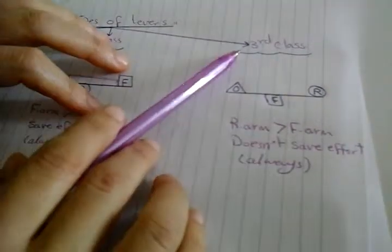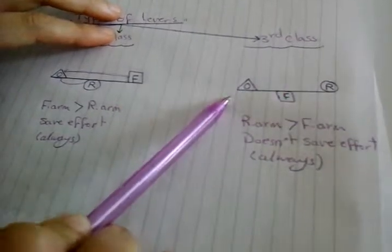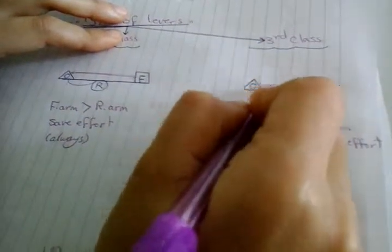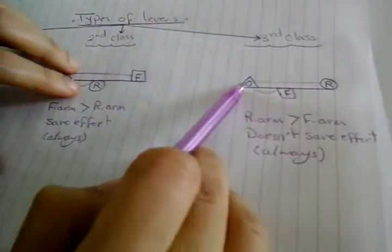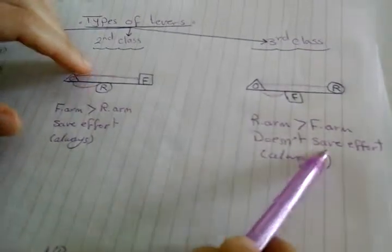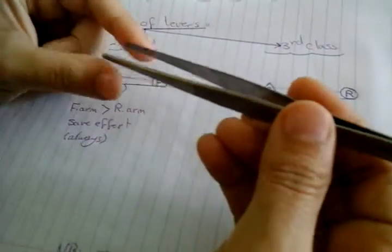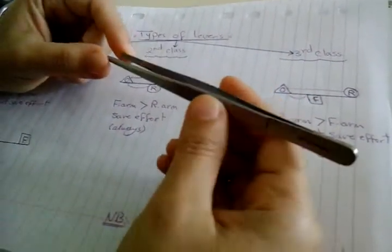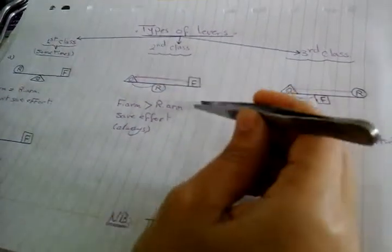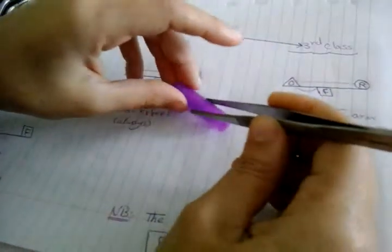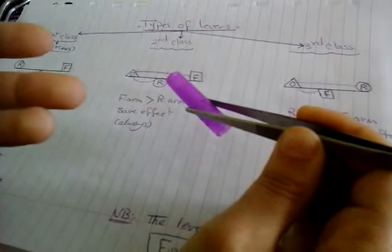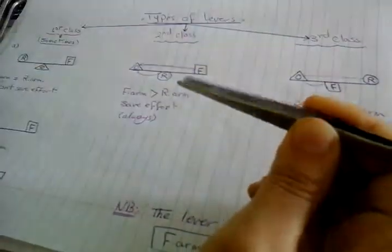In the third class lever, effort force is between resistance and fulcrum. The effort force arm is short, and the resistance arm is always the full longer distance. So resistance arm is always longer than effort force arm — it always doesn't save effort. An example is tweezers, which are used for accuracy and performance, to pick up very small objects with high precision.